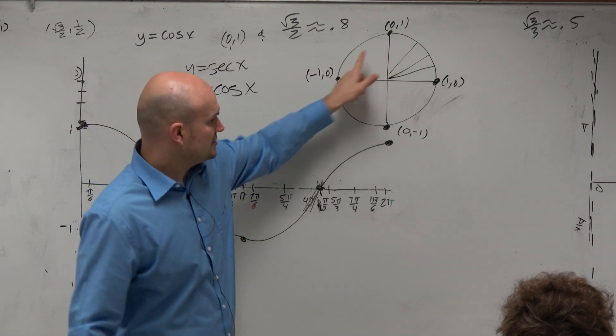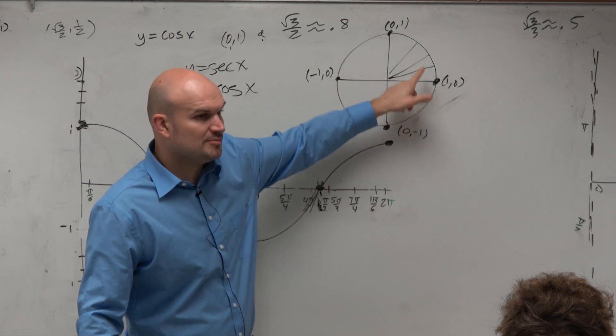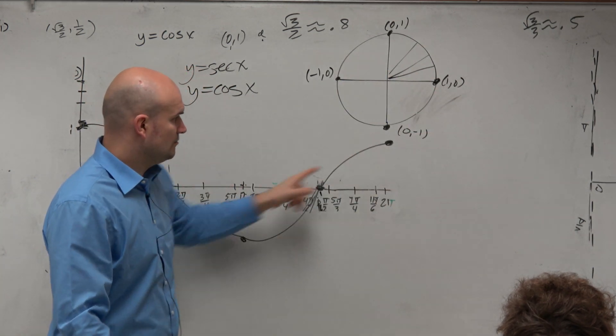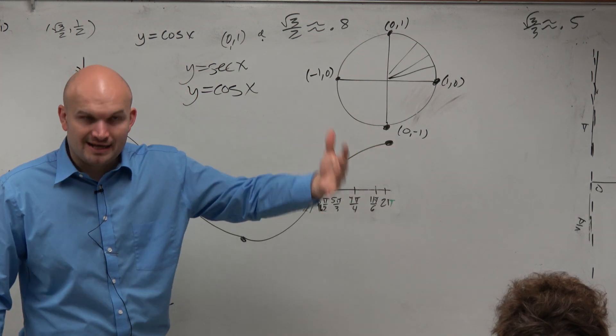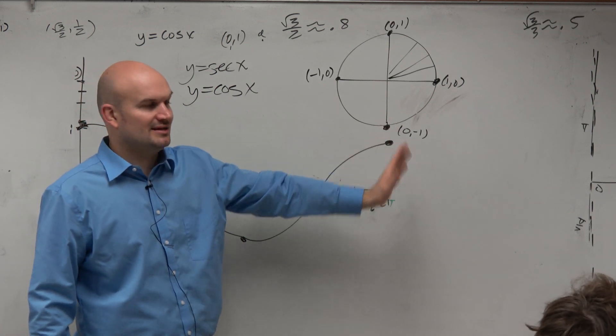Cosine of 3 pi over 2 is 0. And then cosine of 2 pi is 1, right? So you guys can see how we did that. And for those of you that were here last class period, you noticed that we did all of those, the same thing.